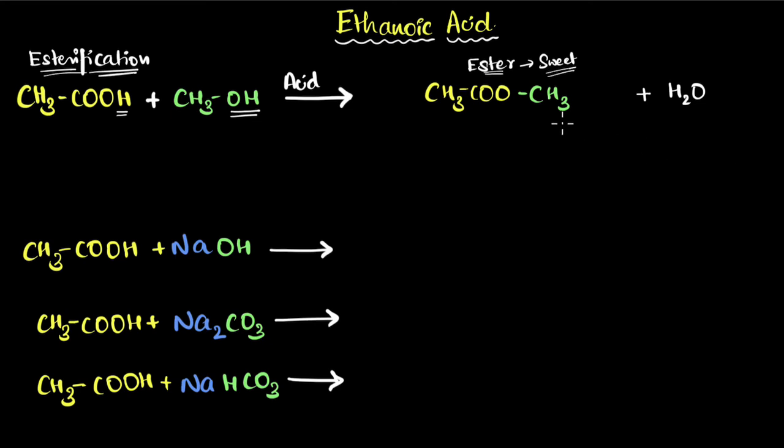But we won't stop there. For this particular ester, we're going to make it react with NaOH. Na being very reactive, it's going to kick the CH3 out, and what we now get is CH3COO-Na.